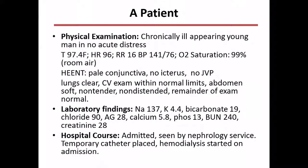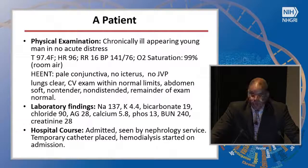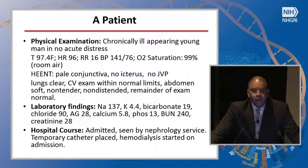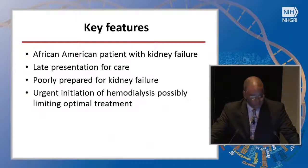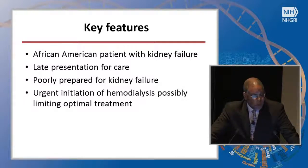In his past medical history, he had no history of kidney disease or other chronic diseases, but had a family history of diabetes and hypertension. On physical exam he was chronically ill-appearing, with blood pressure 141 over 76. Laboratory examination was remarkable: bicarbonate of 19, anion gap of 28, calcium of 5.8, phosphorus of 13, and a high BUN and creatinine of 240 and 28. He was admitted, a temporary catheter was placed, and he was immediately started on hemodialysis.